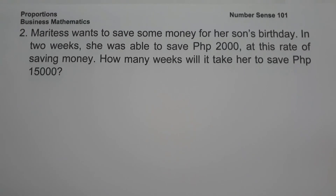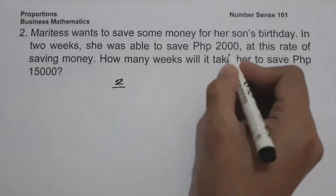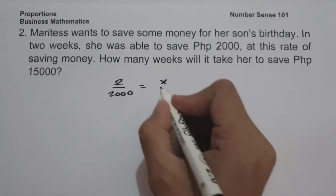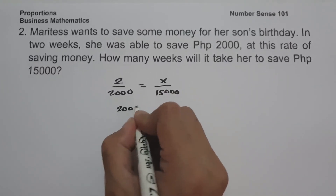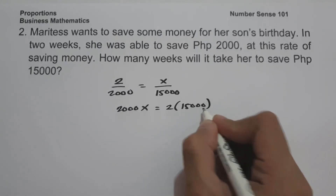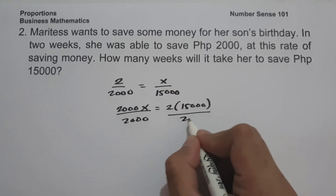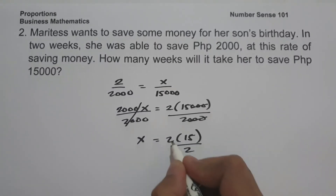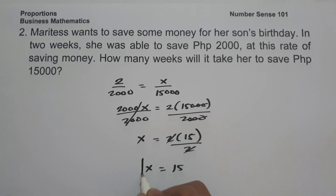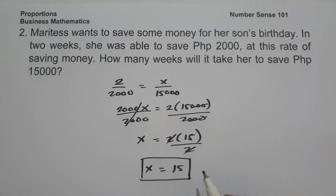On example number two: Marites wants to save money for her son's birthday. In two weeks she was able to save 2,000 pesos. At this rate, how many weeks will it take her to save 15,000 pesos? We write the equation as 2 over 2,000 equals x over 15,000. Cross multiplying gives 2,000x equals 2 times 15,000. Dividing both sides by 2,000 and cancelling zeros gives x equals 15. Therefore, Marites needs 15 weeks to save 15,000 pesos.